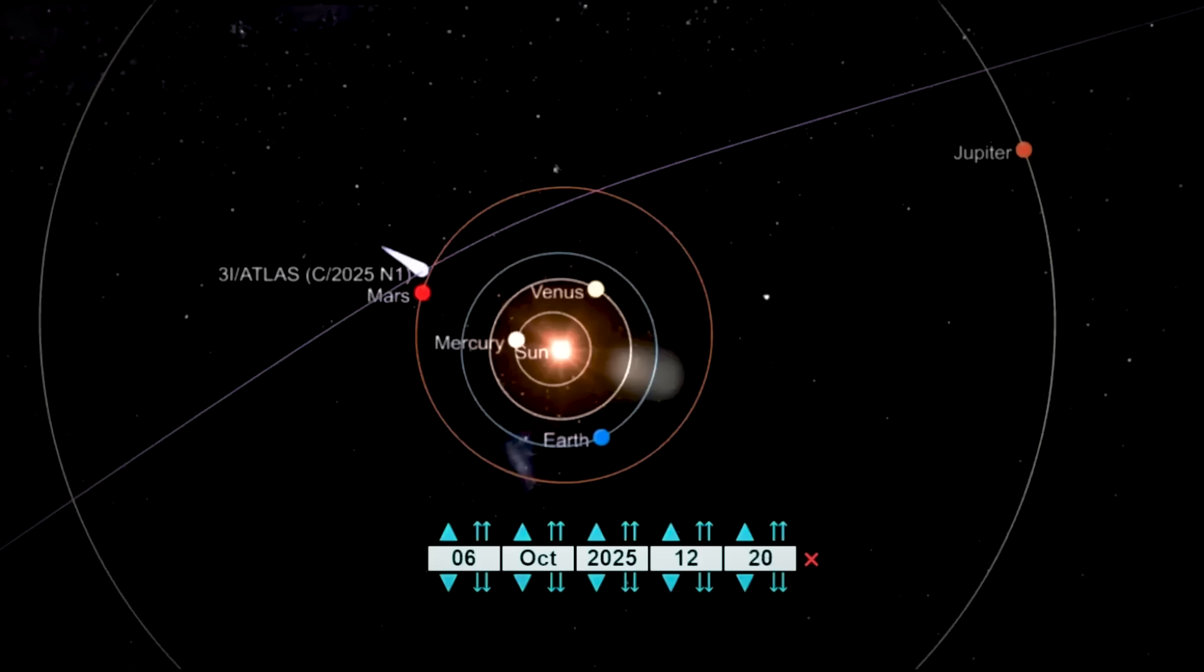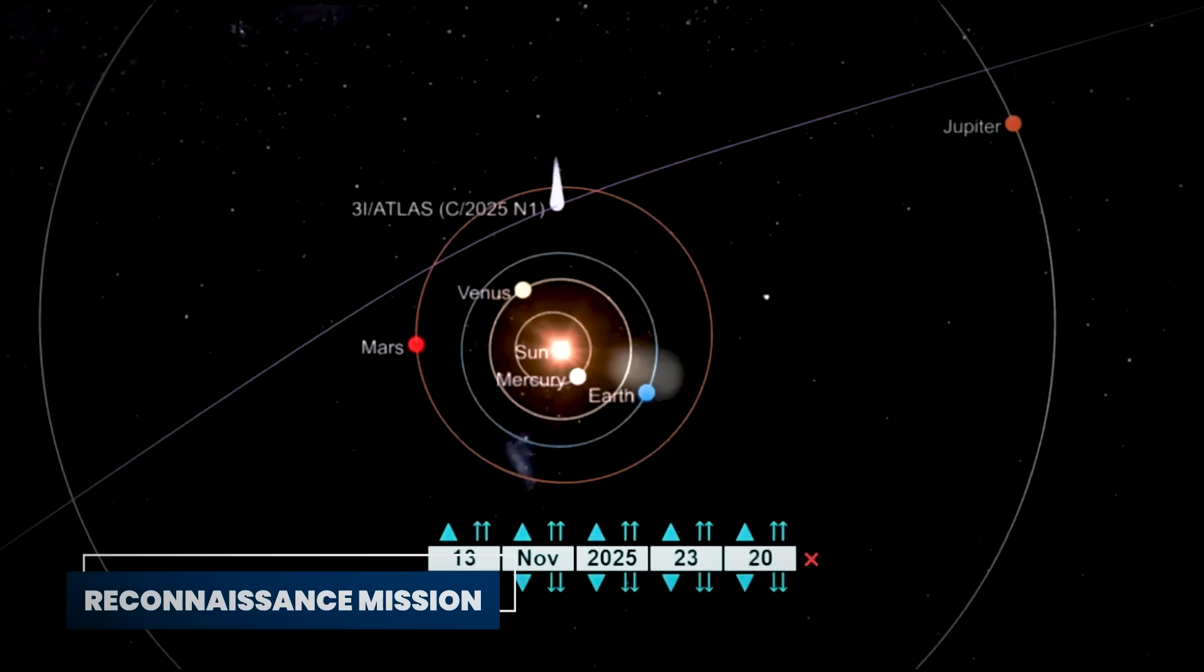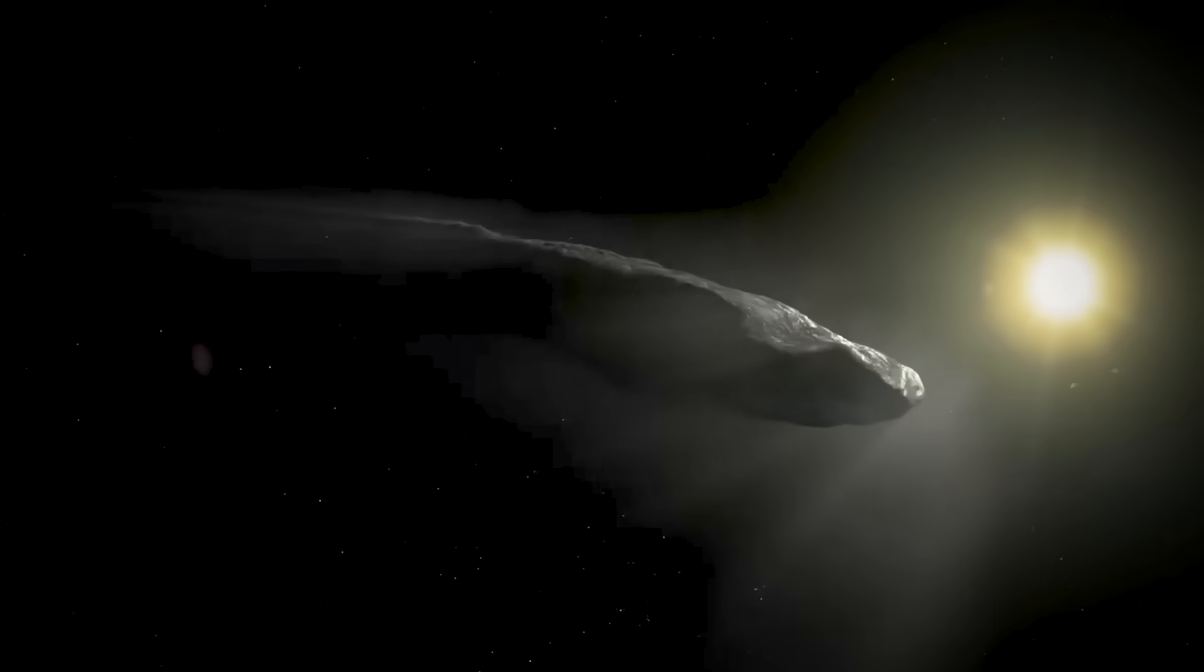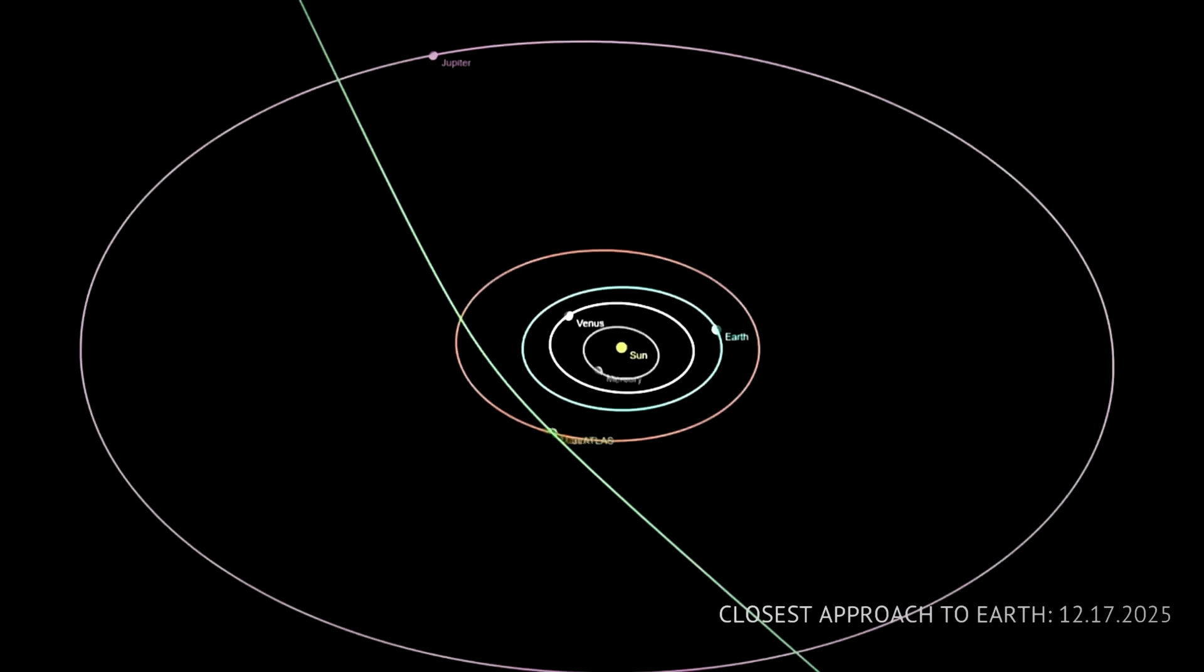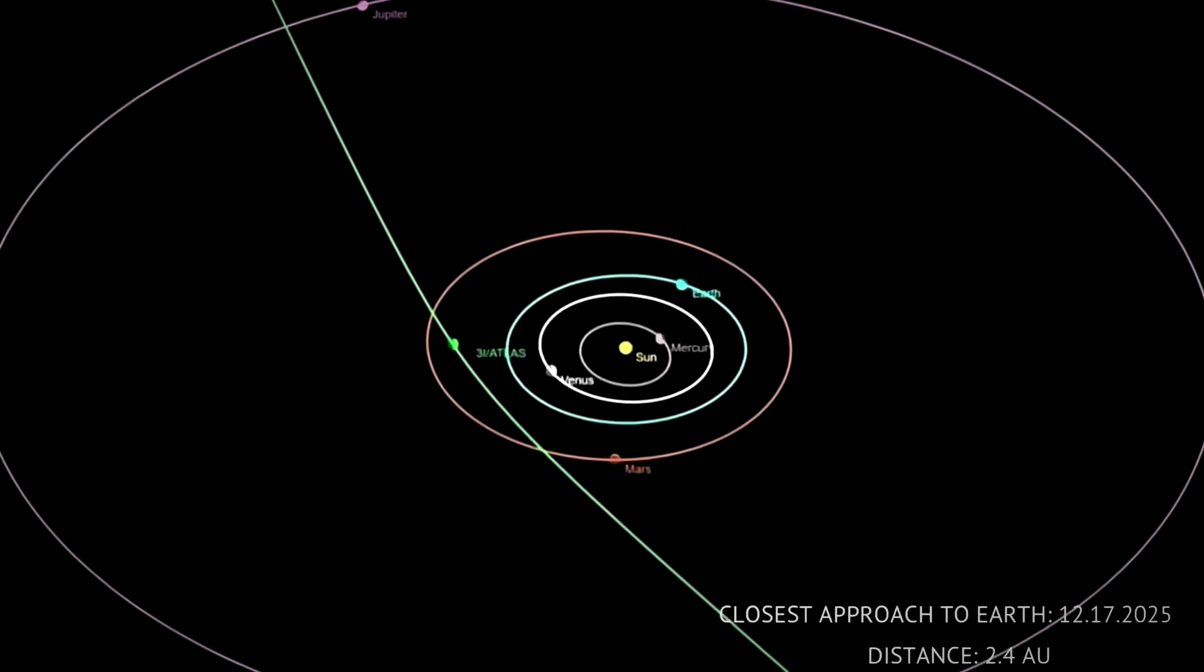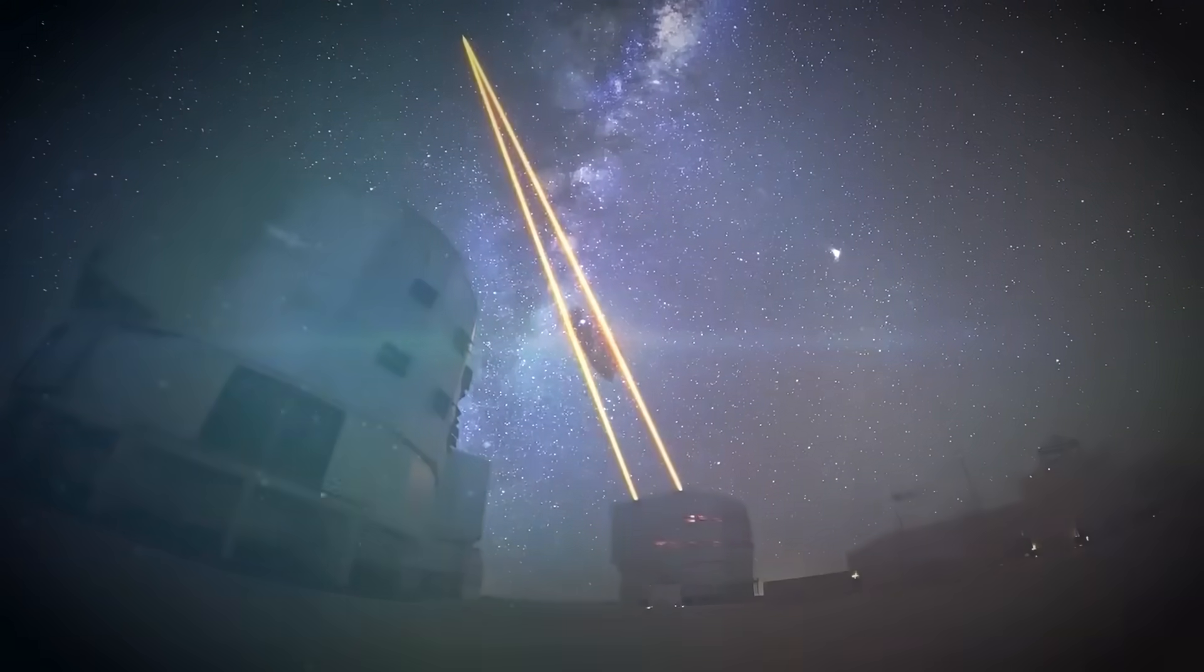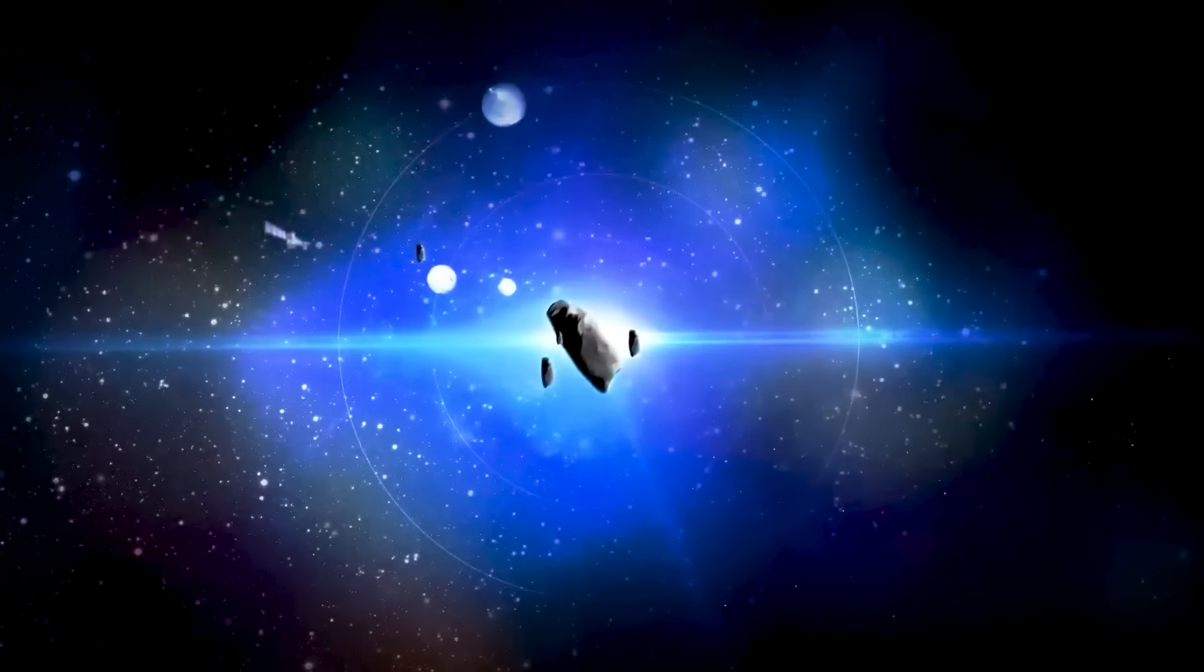The implications of 3I Atlas being artificial are staggering. If this object is some kind of probe or reconnaissance mission, it means we're not alone in the universe. More importantly, it means another civilization has technology advanced enough to send objects across interstellar distances with pinpoint accuracy. But there's another possibility that's even more mind-bending.